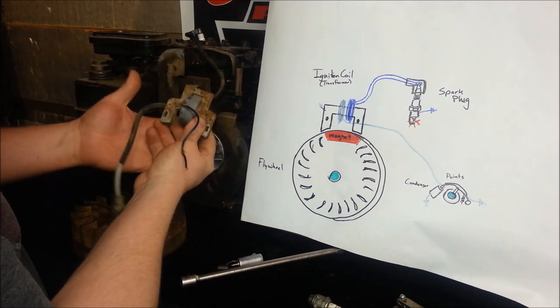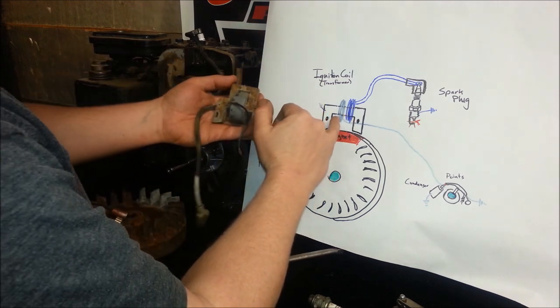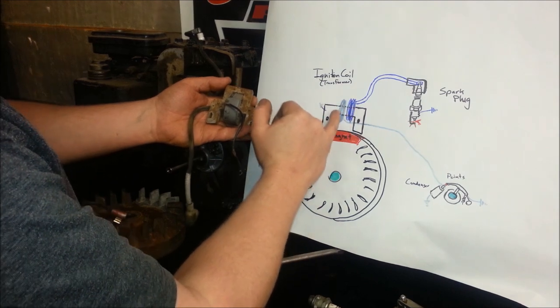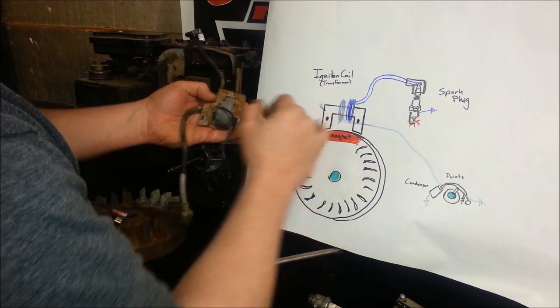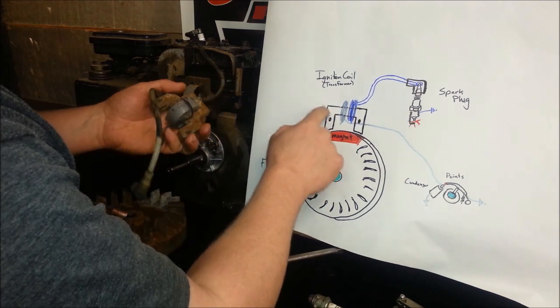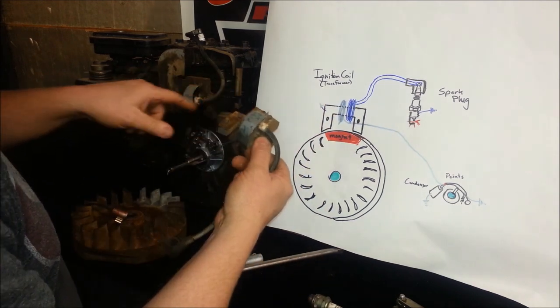The way this works, what makes this tick is you'll notice right here you have two sets of winding. You have what's called a primary winding and a secondary winding. One side, they both ground out to the frame of the engine. Just ground out to here and they're bolted to the engine.